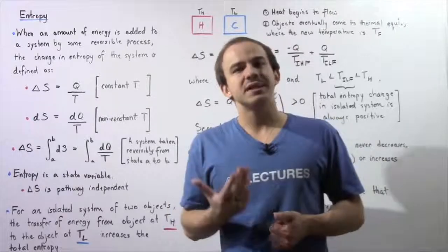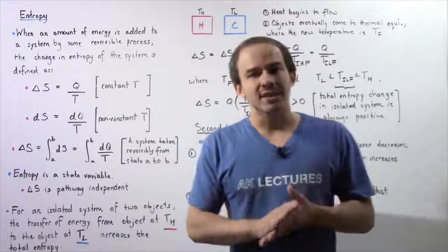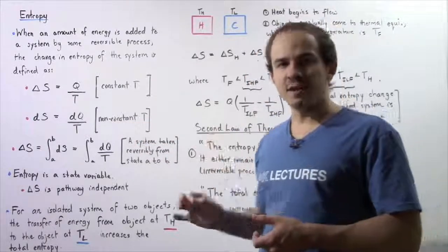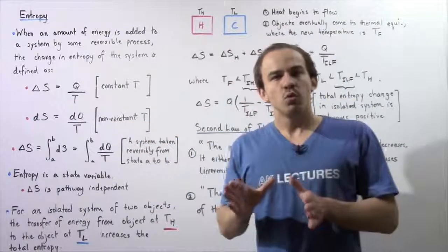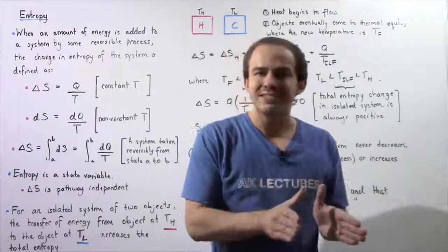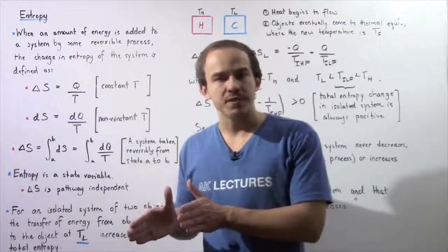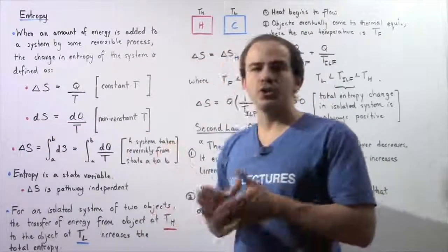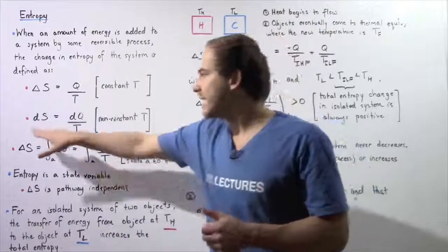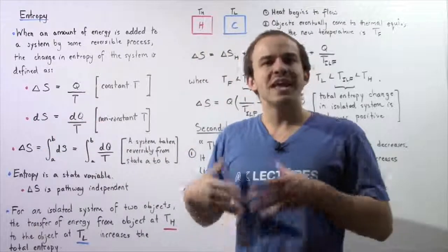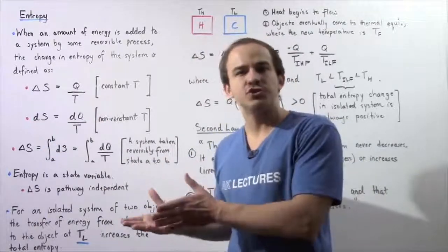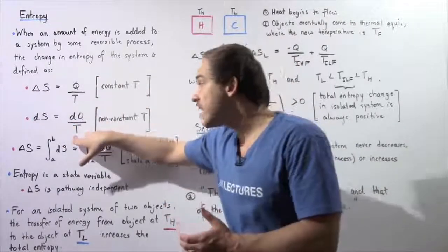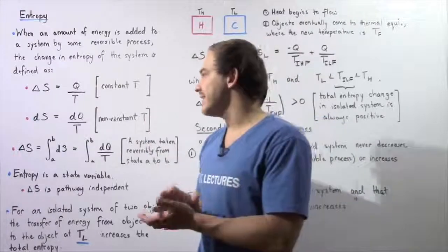What happens if the temperature during the process is not constant? If we're dealing with a non-constant temperature, that means we have to talk about infinitely small changes in our entropy. At that particular moment in time, the infinitely small change in our entropy given by dS is equal to the infinitely small change in our energy that flows into our system divided by the temperature at that instant in time.